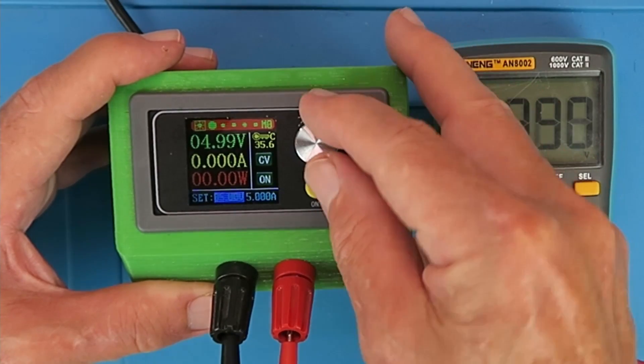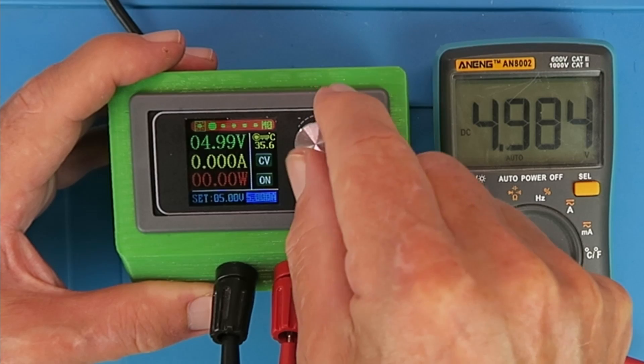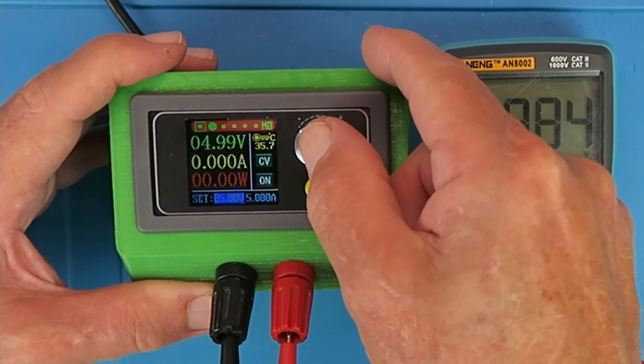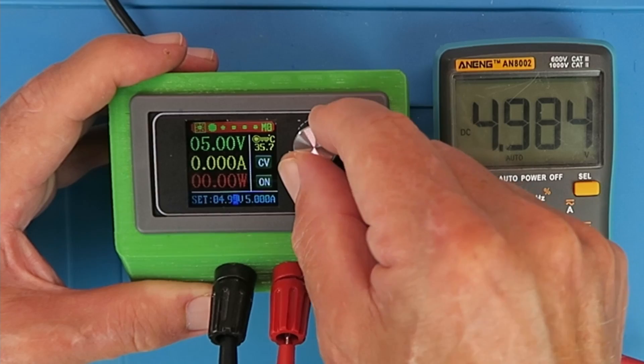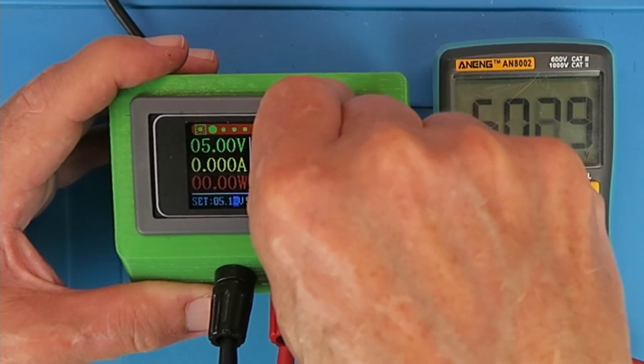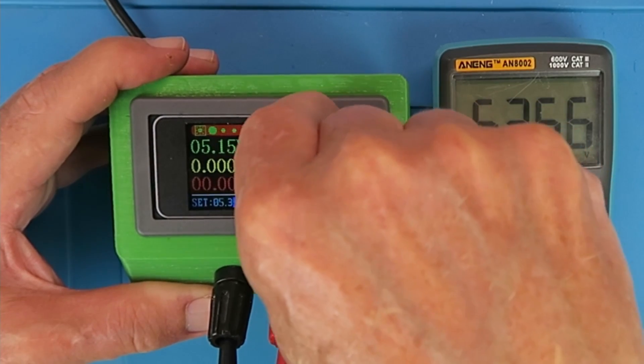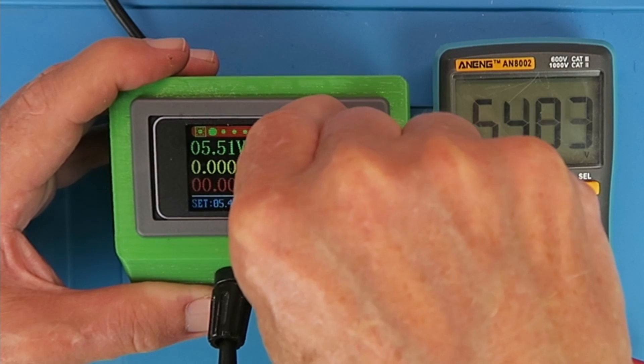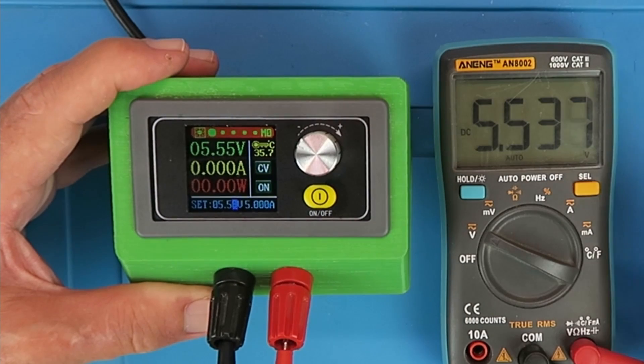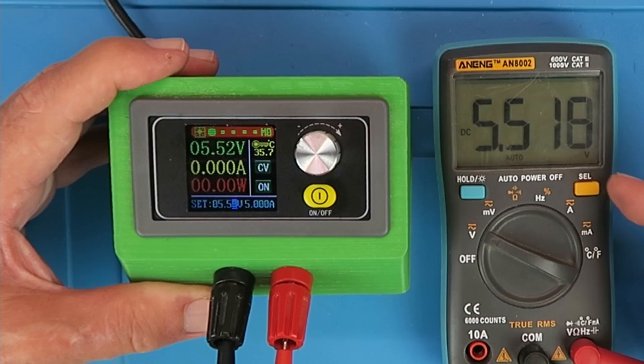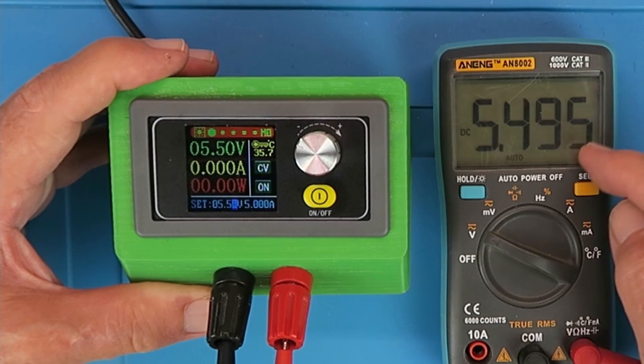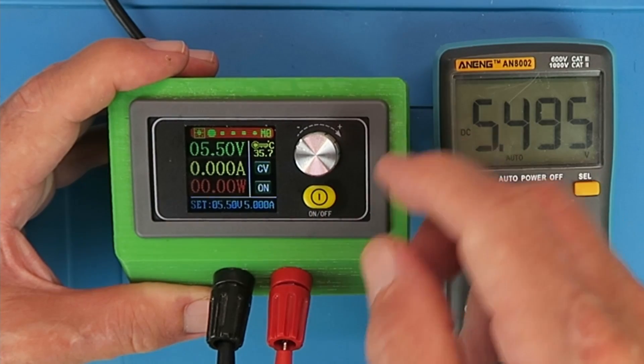If you press the button, it highlights the voltage here or the current. Highlight again and you can adjust the output voltage on the fly, as it were. So we take it up to 5.5. 5.5 on the display there, and we could also change the current.